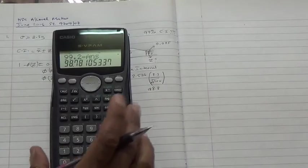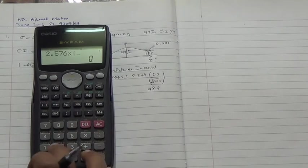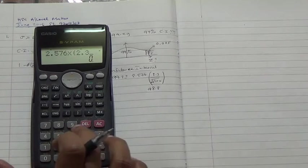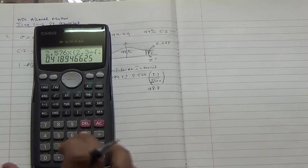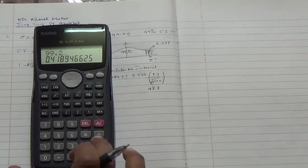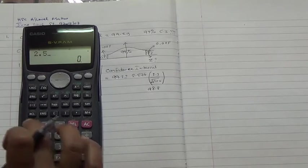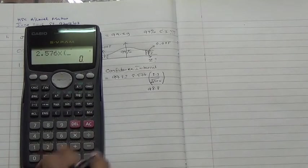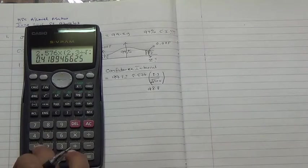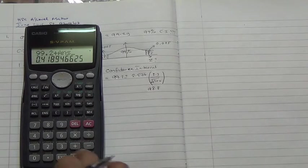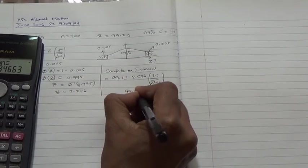And also, the same thing, we say 2.576, multiplied by 2.3, divided by the square root of 200. Okay? And then, you take 99, which is the mean, 0.2, minus the answer. Oops, sorry. I just did the minus. I was sorry about that. So, 2.576 times 2.3, divided by the root of 200. Okay? So, we're going to take 99.2 this time, plus the answer, 99.6. Okay? So, we have it as 99.6.